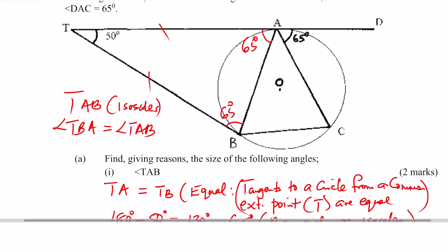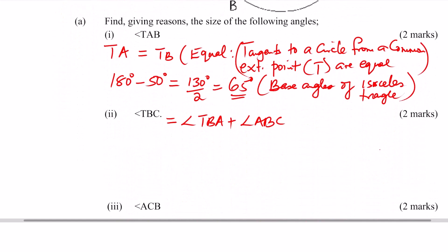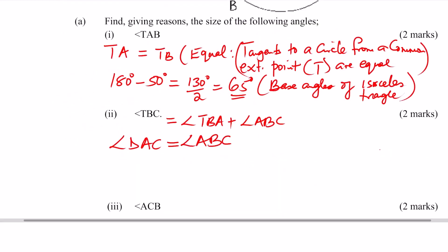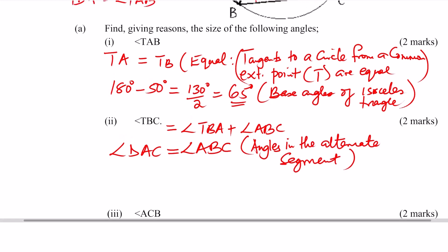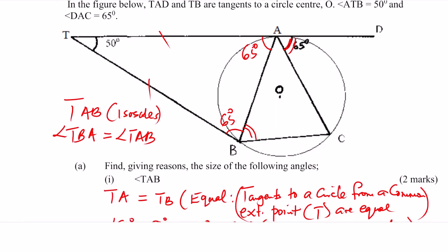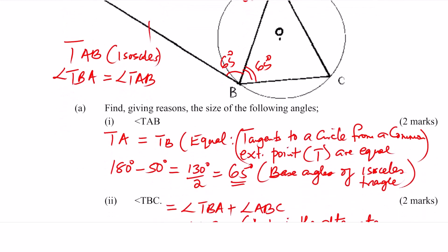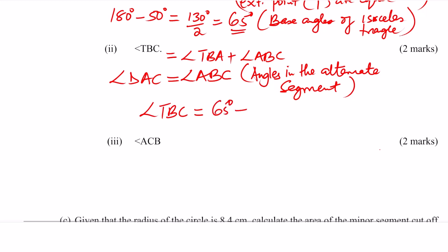Look at angle DAC, which is 65°. Angle DAC is equivalent to angle ABC — these are angles in the alternate segment. Since angle DAC is 65°, angle ABC is also 65°. Therefore angle TBC equals angle TBA plus angle ABC, which is 65° plus 65°, giving 130°. The reason used is angles in the alternate segment.